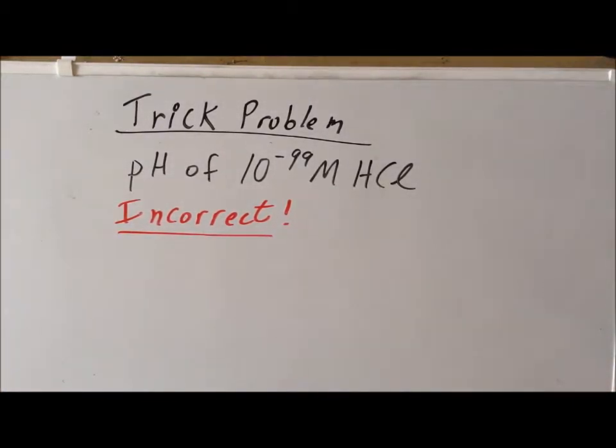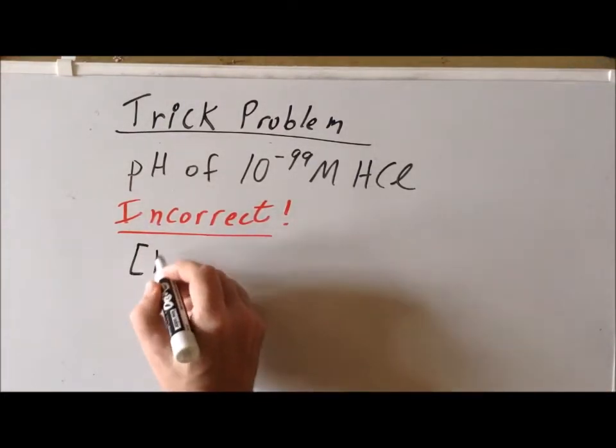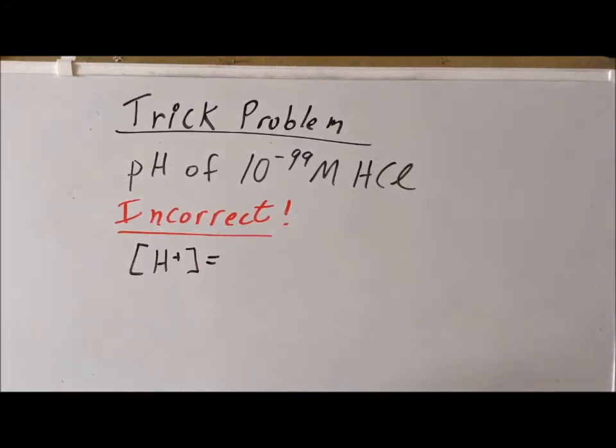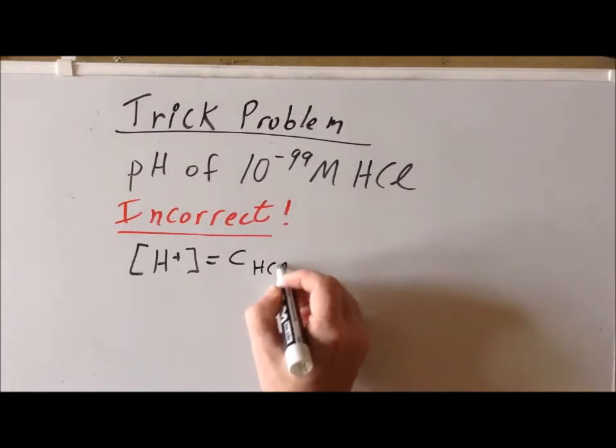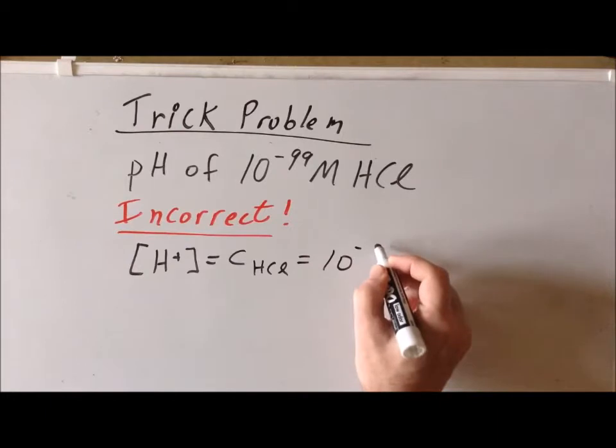To solve this incorrectly, we do correctly note that hydrochloric acid is a strong acid. Therefore it will dissociate completely in water. So we can make a quick assumption that the hydrogen ion concentration is exactly equal to the concentration of the hydrochloric acid, which we know is 10 to the minus 99 molar.